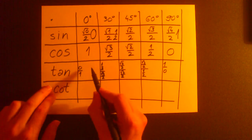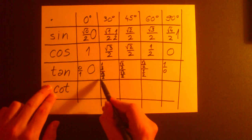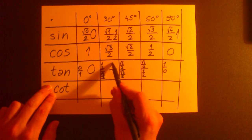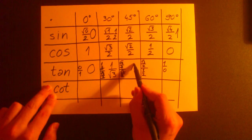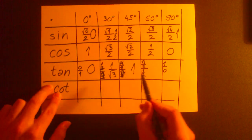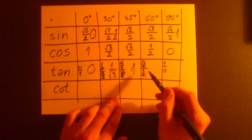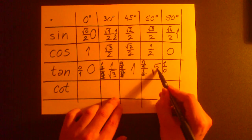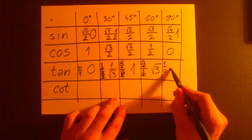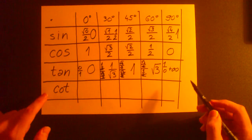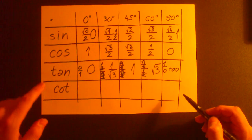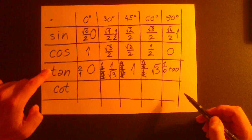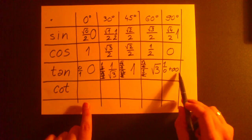For the tangent row, what we have here is: 0, 1, square root of 3, and infinity. In the cotangent row we will put values like in the tangent row but in the opposite direction.